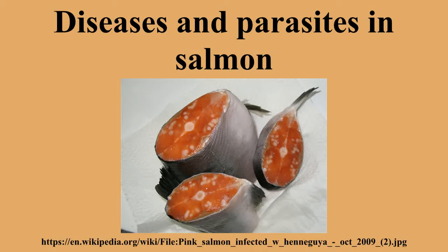ISAV is now the first of the diseases classified on List 1 of the European Commission's fish health regime. Amongst other measures, this requires the total eradication of the entire fish stock should an outbreak of the disease be confirmed on any farm. ISAV seriously affects salmon farms in Chile, Norway, Scotland and Canada, causing major economic losses to infected farms. As the name implies, it causes severe anemia of infected fish.